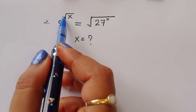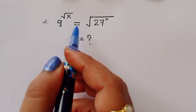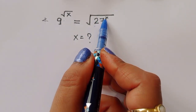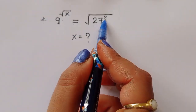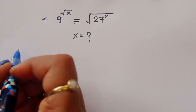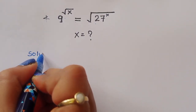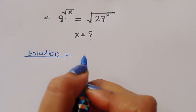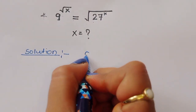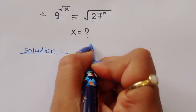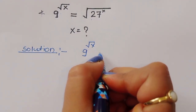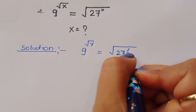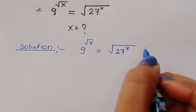The question is: 9 to the power of square root of x is equal to the square root of 27 to the power of x. We have to find out the value of x.